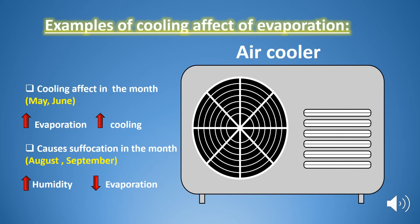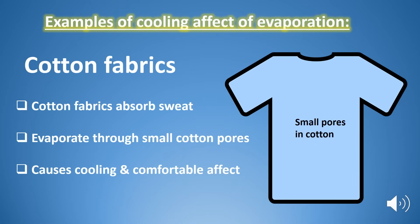Another example is the air cooler, which gives a cooling effect in the months of May and June but produces suffocation in August and September. This is because the atmosphere has a specific water vapor holding capacity. During May and June, the normal process of evaporation takes place smoothly and causes the cooling effect. But during August and September, humidity in the atmosphere increases, which decreases the rate of evaporation. Wearing cotton fabrics during summer feels comfortable because cotton fabrics with small pores absorb sweat and evaporate it through these pores, making us feel comfortable and cool.